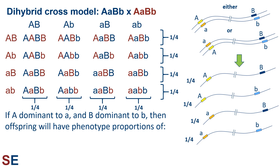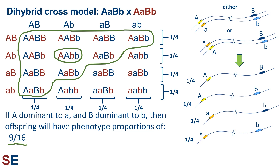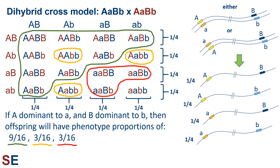For the double dominant phenotype, every individual with one or two capital A and one or two capital B alleles will have this phenotype — looking through the array, we find nine that match. For the dominant A and recessive B phenotype, every individual with one or two capital A and both lowercase b alleles matches — we find three. For the recessive A and dominant B phenotype, individuals with both lowercase a alleles and one or two capital B alleles match — we find three. Lastly, the double recessive phenotype requires both lowercase a and both lowercase b alleles — there is just one genotype. These 9:3:3:1 fractions indicate the proportions of offspring expected if the assumptions of Mendelian segregation are met.